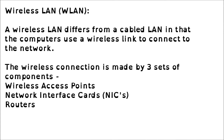Wireless LAN. A wireless LAN differs from a cabled LAN in that the computers use a wireless link to connect to the network. The wireless connection is made by three sets of components: wireless access points, network interface cards or NICs, and routers.